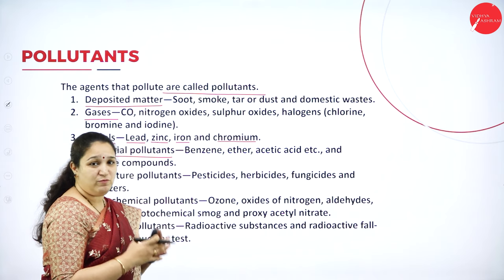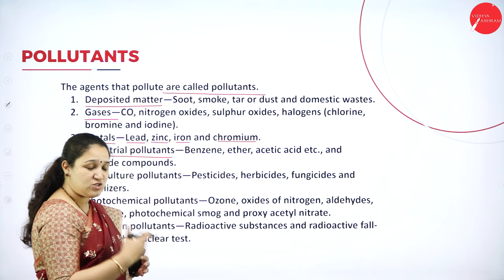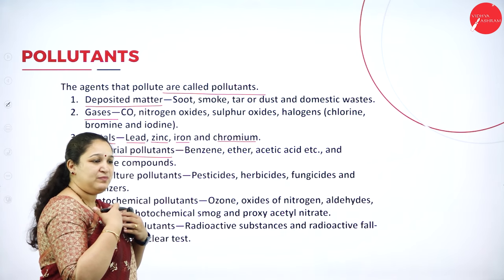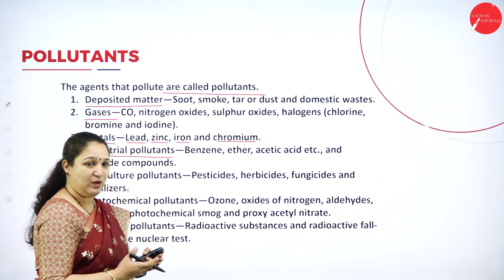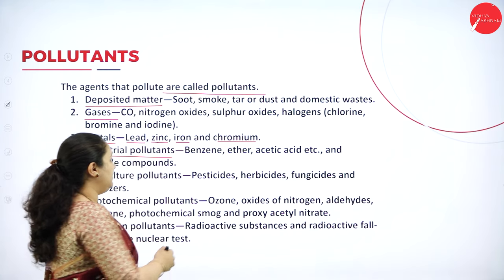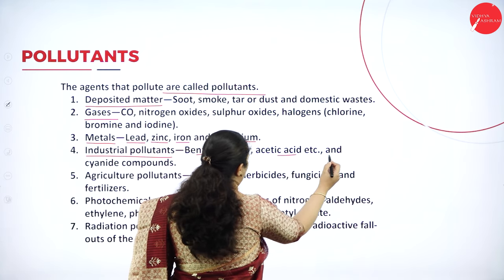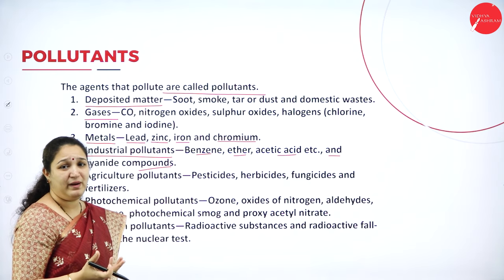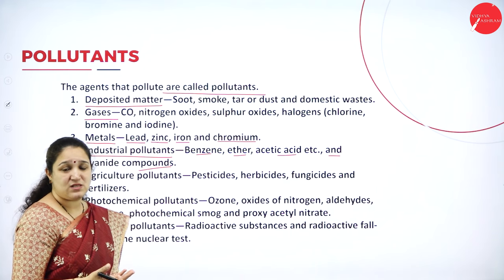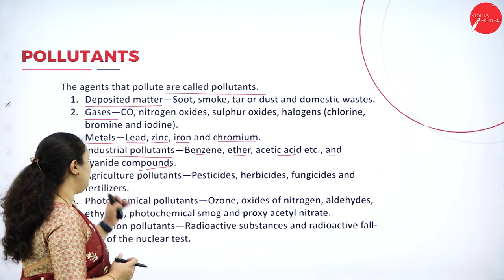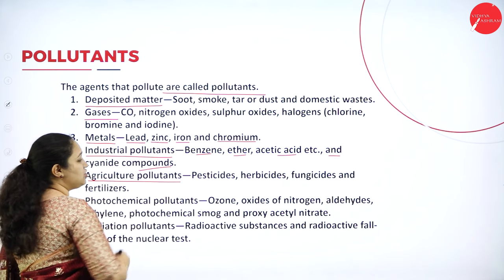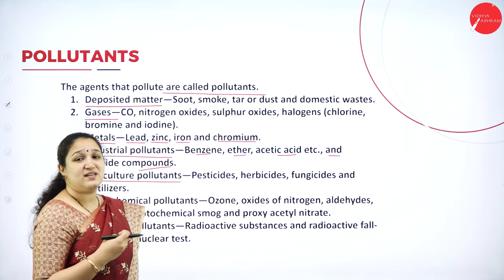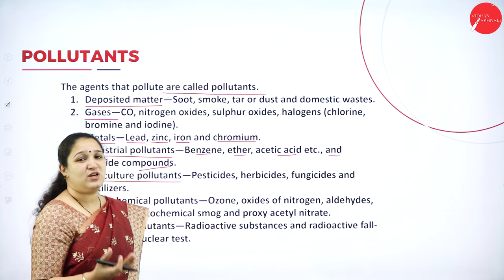Then we have industrial pollutants — these are pollutants coming basically from industries, either in industrial effluent, as industrial by-products, or as gases from industries. They contain benzene, ether, acetic acid, cyanide compounds, heavy metals, and radioactive substances. All of these are called industrial pollutants.